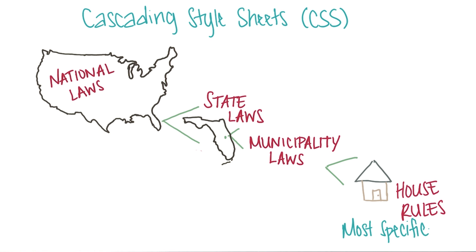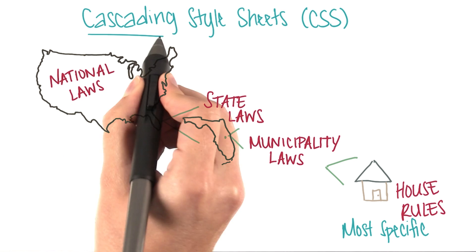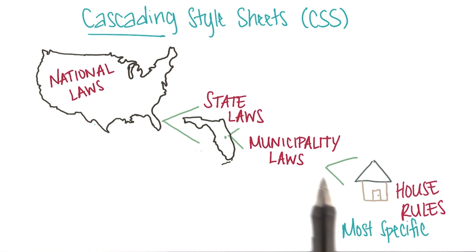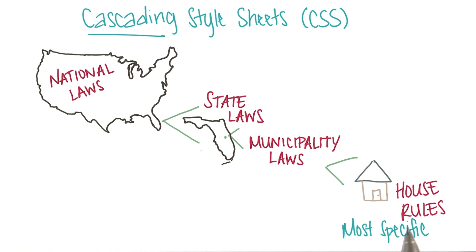Now, this concept of most specific rule applied is what the word cascading means. You keep going down and down into the rules until you find the one that best describes the elements, and then that rule gets applied.